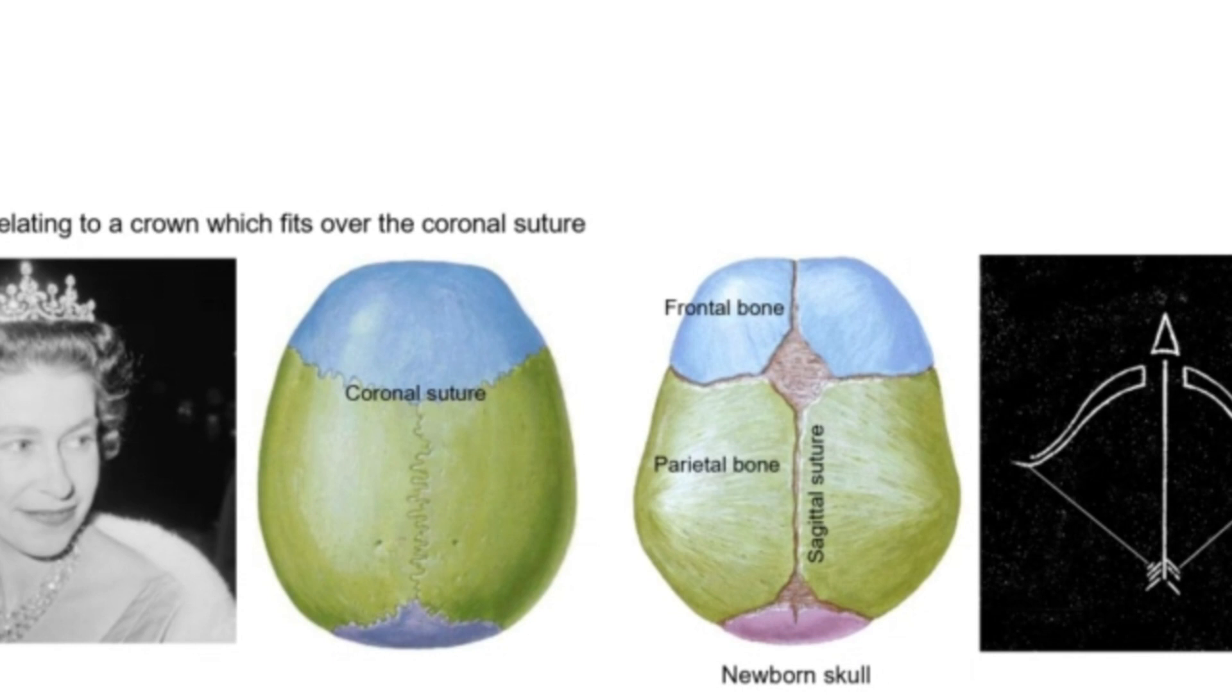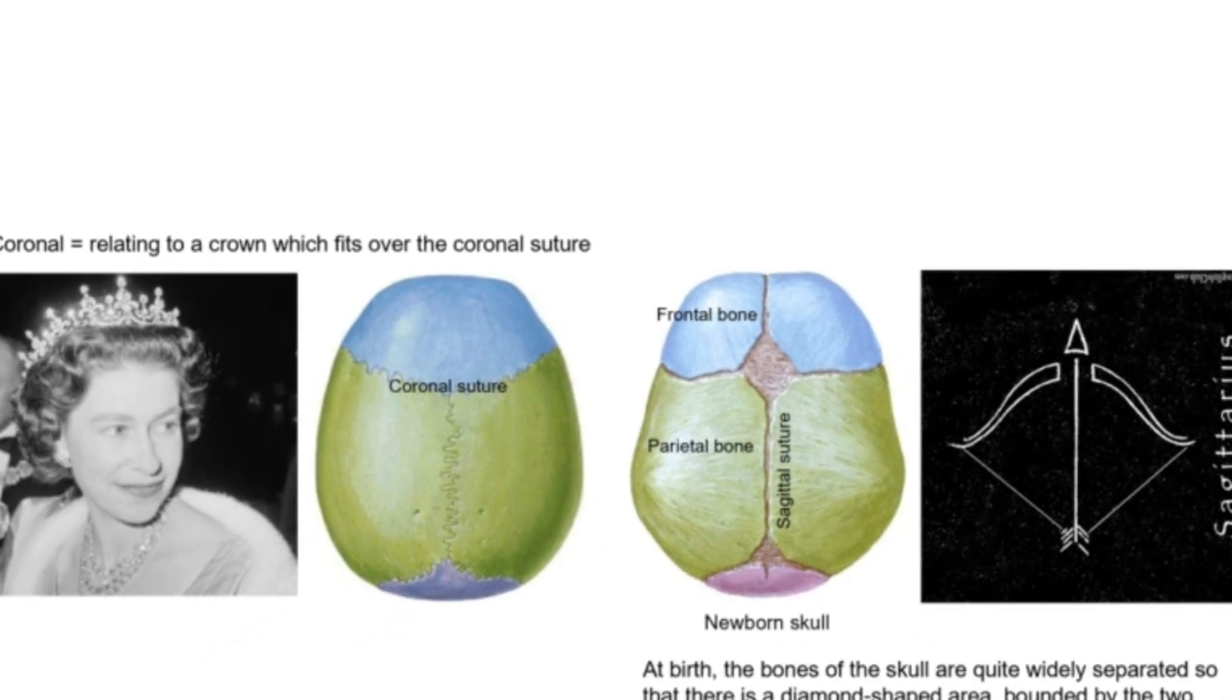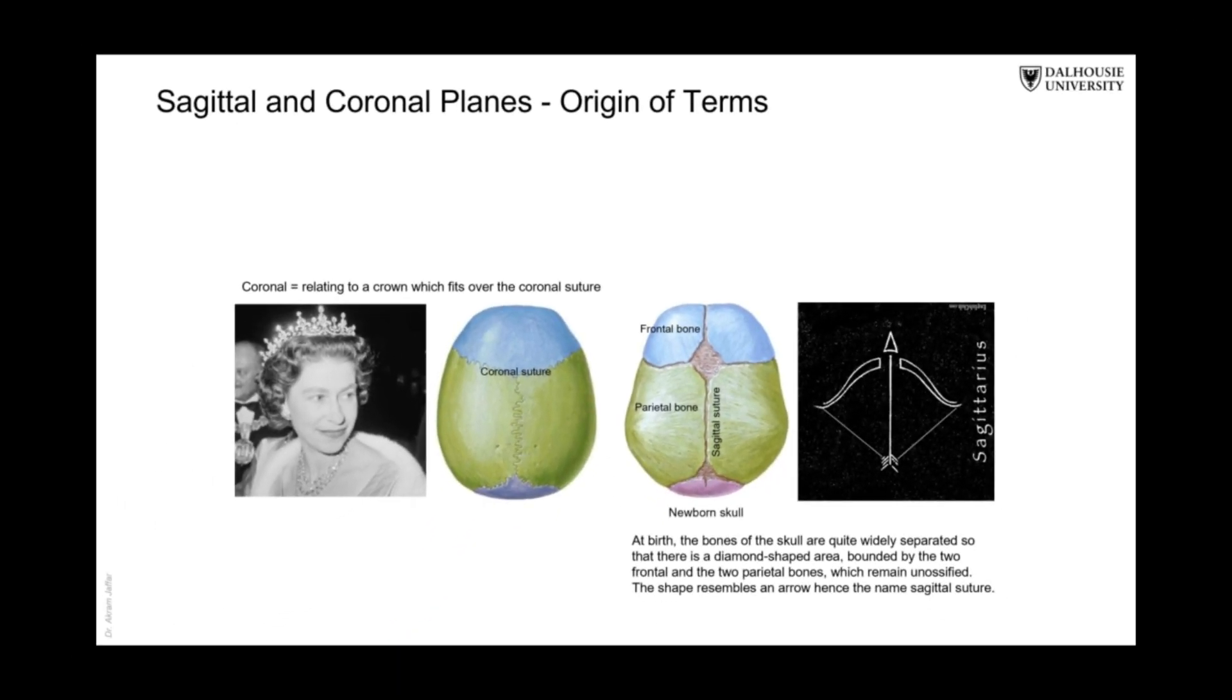They are not bony and they are called fontanels, a small of fountain. So we have an anterior fontanel and a posterior fontanel here. And also this bone here, which is the frontal bone, the blue one, is in two pieces. And then these two pieces will fuse with each other later on.